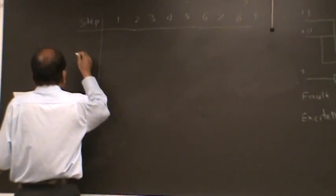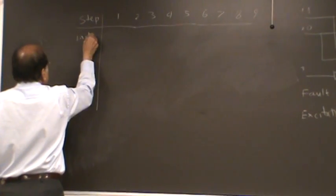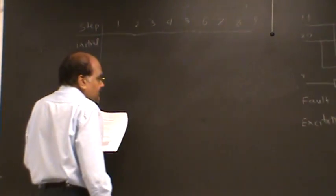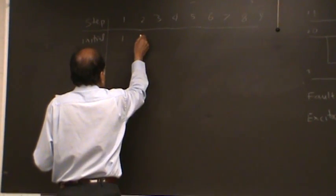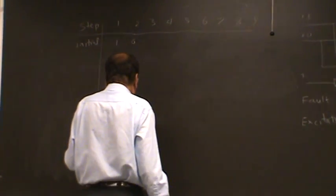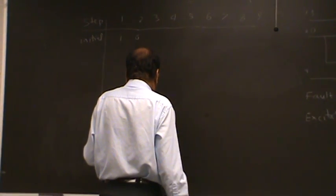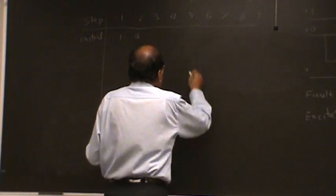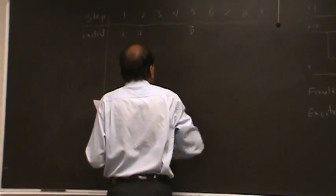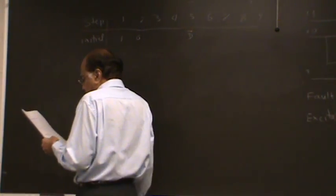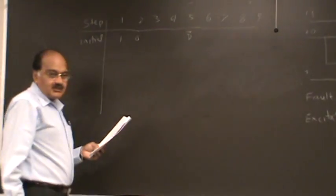So initially, let us assume this is the initial step. So nodes one and two we have chosen to be one, zero. And node five we have chosen to be D bar. And all other nodes at this point are unspecified.